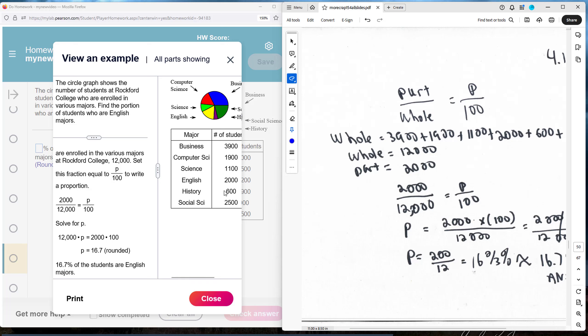And the part that we are interested in is for English majors. In English, from the legend, we see English 2,000 students who are English majors. So we can convert that fraction there to a percentage by using a percent proportion.